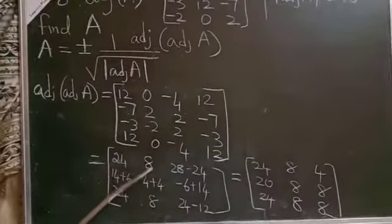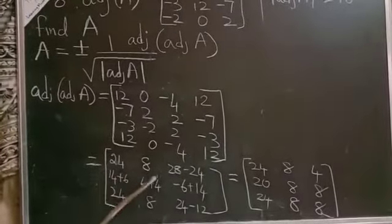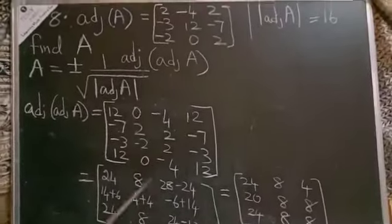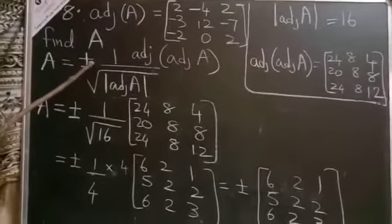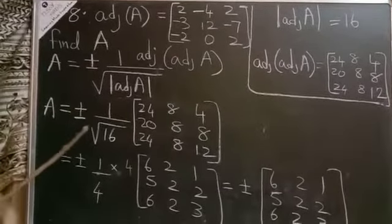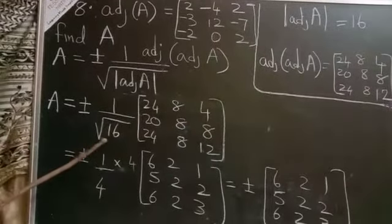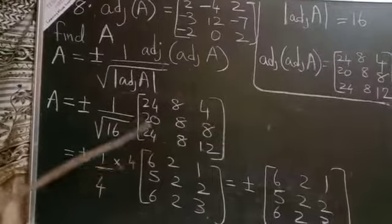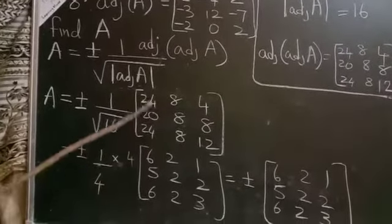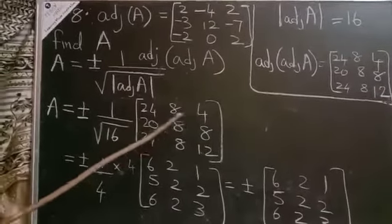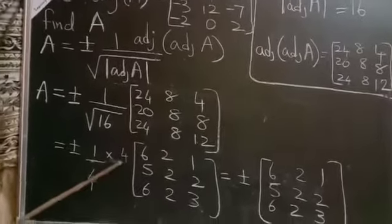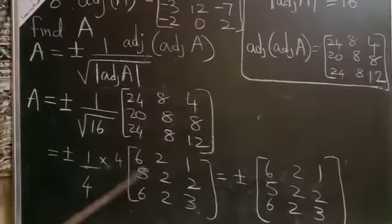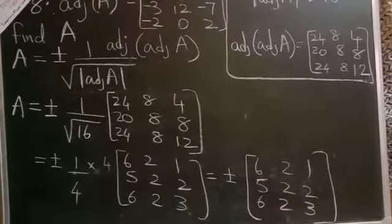Simplifying: values are 24, 8, 4; 20, 8, 8; and 24, 8, 24, 8, 8. After forming the correct matrix, we cancel common factors between the outer and inner forum. The remaining result is plus or minus: 6, 2, 1, 5, 2, 2, 6, 2, 3. This is your answer.